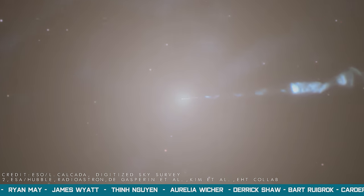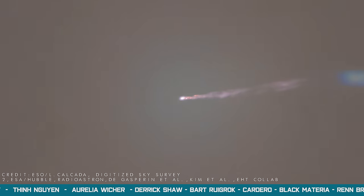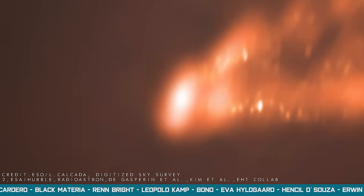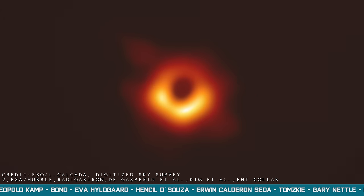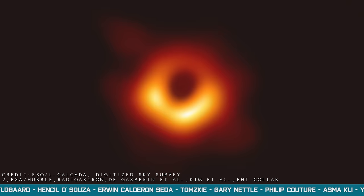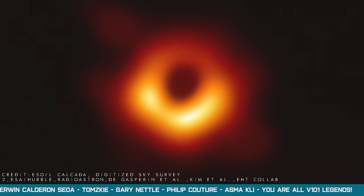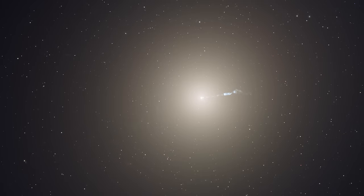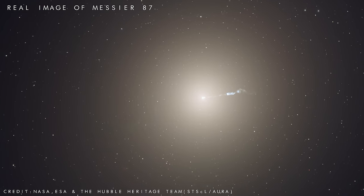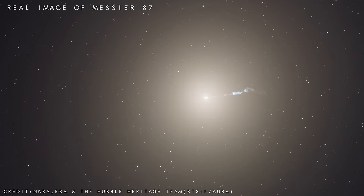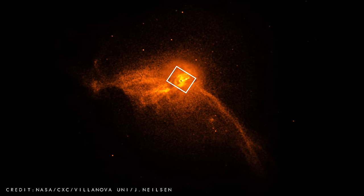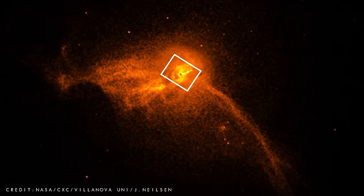Although these cosmic monsters are effectively invisible, we have managed to image the hot disk of material that encircles one. This stunning image reveals for the first time the shadow of a supermassive black hole that is surrounded by a bright ring of bending light and gas. It is located at the centre of Messier 87, which is a large elliptical galaxy around 55 million light years away, and one of the reasons we can see this mysterious bright structure is because it is enormous.